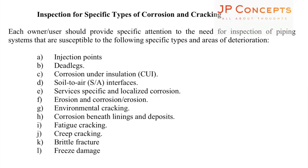Here we are going to discuss specific types of corrosion and cracking inspections: injection points, dead legs, CUI, soil to air interfaces, service-specific localized corrosion, erosion and corrosion-erosion, environmental cracking, corrosion under deposit, fatigue cracking, creep cracking, brittle fracture, and freeze damage. These are the different types of corrosion and cracking that piping systems are susceptible to.